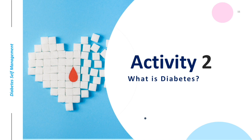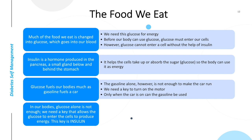Sometimes there is confusion about the different types of diabetes and what diabetes does to our body. Let's start with the food we eat. Much of the food we eat is changed into glucose, which goes into our blood. We need this glucose for energy. Before our body can use glucose, it must enter our cells. However, glucose cannot enter a cell without the help of insulin. Insulin is a hormone produced in the pancreas, a small gland located below and behind the stomach. It helps the cells to take up or absorb the sugar — glucose — so the body can use it as energy.